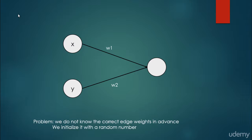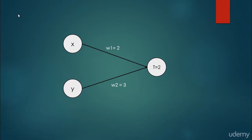Whenever x is 0 or 1 and y is equal to 0 or 1, we would like to construct a neural network that can handle this problem. But the problem is that we do not know the correct edge weights — w1 and w2 — in advance, so first we have to initialize them with random numbers. For example, w1 equals 2 and w2 equals 3. The right edge weights, as seen in the previous video, are w1 equals 1.5 and w2 equals 1.5, with a threshold equal to 2.